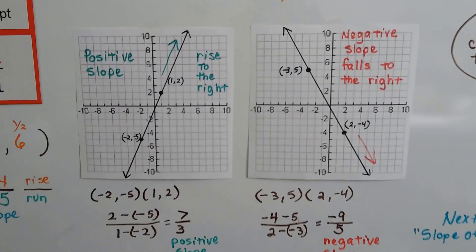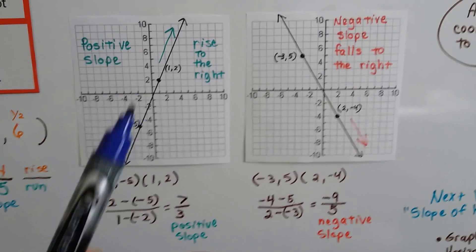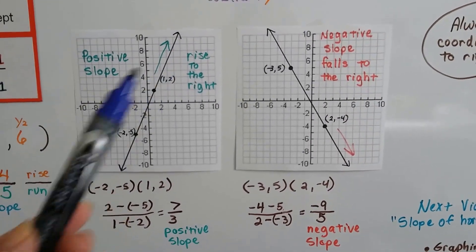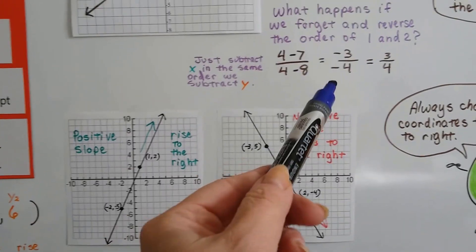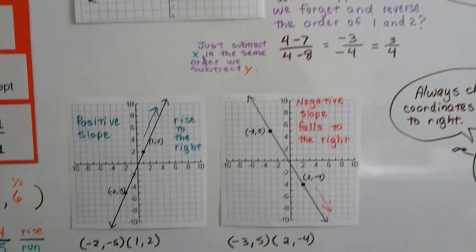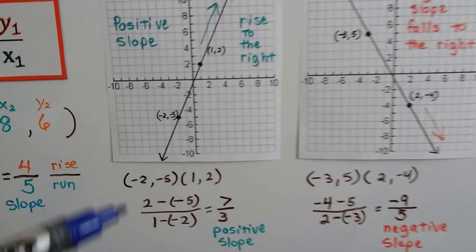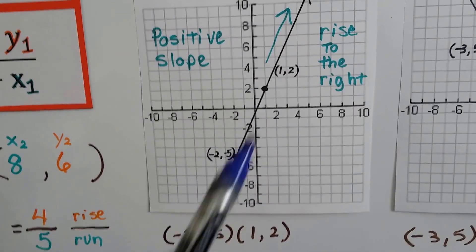Now check this out. This is kind of cool. Did you know that you could just look at a line and tell if the number is going to be a positive or a negative slope? Look at this one right here. This is a positive slope. It's rising to the right.